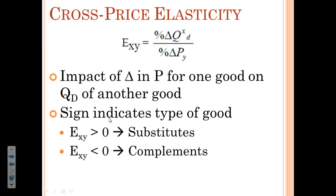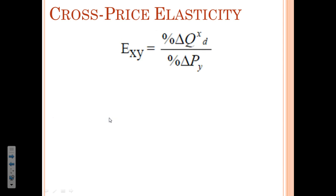The first one we're going to look at is cross price elasticity. That's looking at how a change in the price of one good will affect the quantity demanded of a different good. What we're looking at here is whether we have a substitute or a complement on our hands. The cross price elasticity is looking at: if I change the price for one good, what does that do to the quantity demanded of the other?